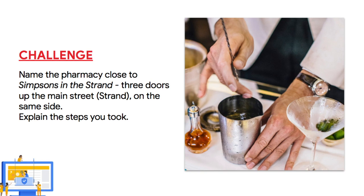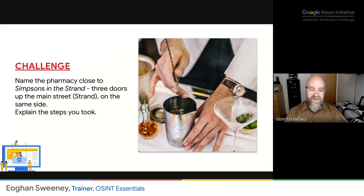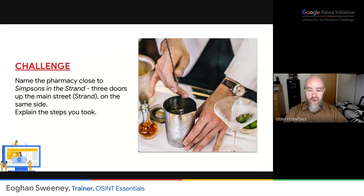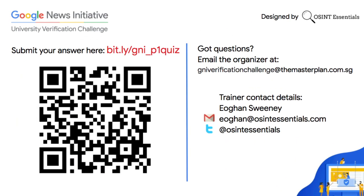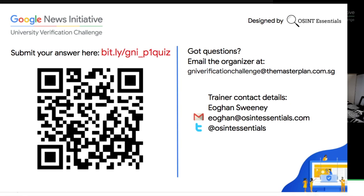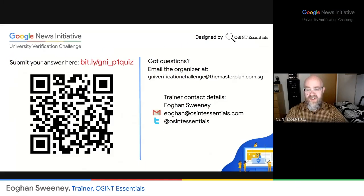Here's a challenge: name the pharmacy that is close to Simpsons in the Strand. You may need to use a search engine to figure out where that is in the first place. But once you do, it's about three doors up the main street on the same side of the street as Simpsons — that street is called Strand. Once you've done that, explain the steps you took. You can submit your answer using the short link or QR code shown. If you do have any questions, please don't hesitate to reach out either to the organizer at the email shown or directly to me — I'll always be happy to answer questions.